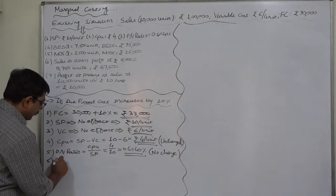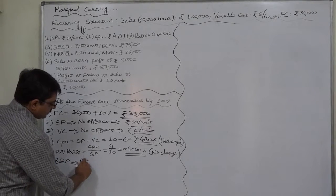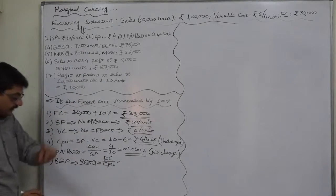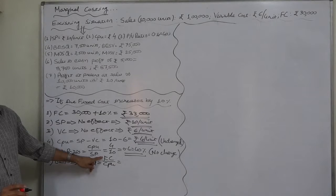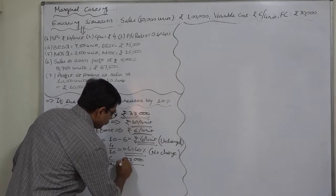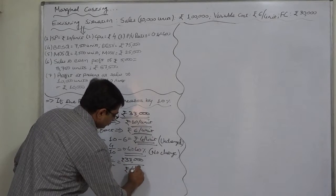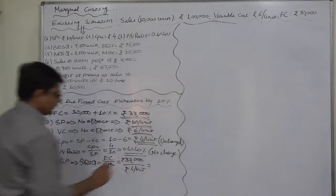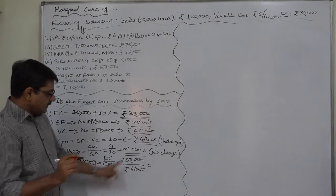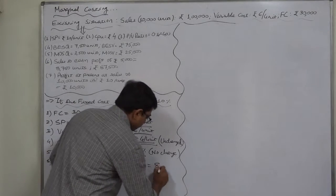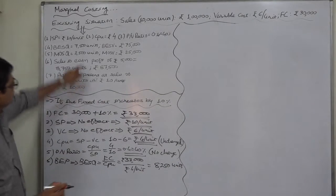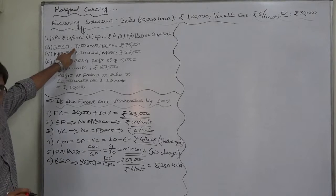But now what about breakeven point? First of all, breakeven sale quantity. It is fixed cost upon contribution. Now what is going to happen? The fixed cost is changed from 30,000, it is now rupees 33,000. So the breakeven is going to change: 33,000 divided by 4, that means it is now 8,250 units, against 7,500 units under the existing situation.